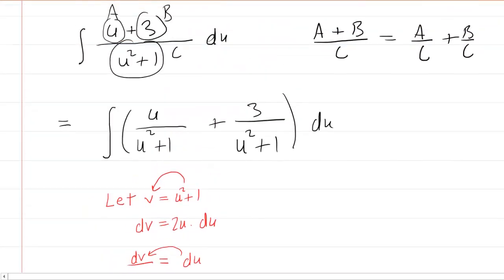So that finishes off that integral. We also need the second integral. So let's take a look at that one. This is three over u squared plus one. What we'll do is factor out the three. So we'll have three times the integral of one over u squared plus one.